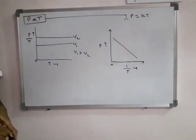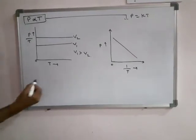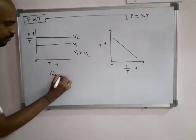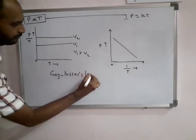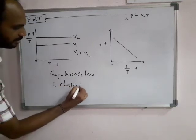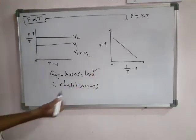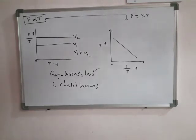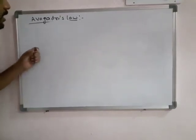These are the different graphs for Gay-Lussac's law. In some books it is also given that Gay-Lussac's law is known as Charles's law too, but the perfect name is Gay-Lussac's law. Now we see the last gas law, that is Avogadro's law.